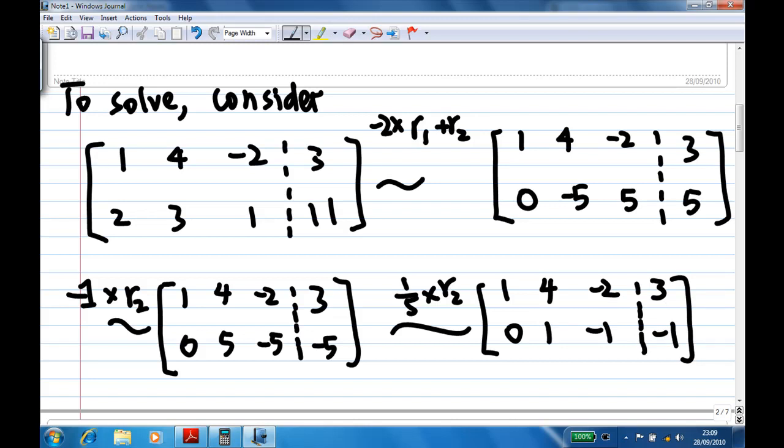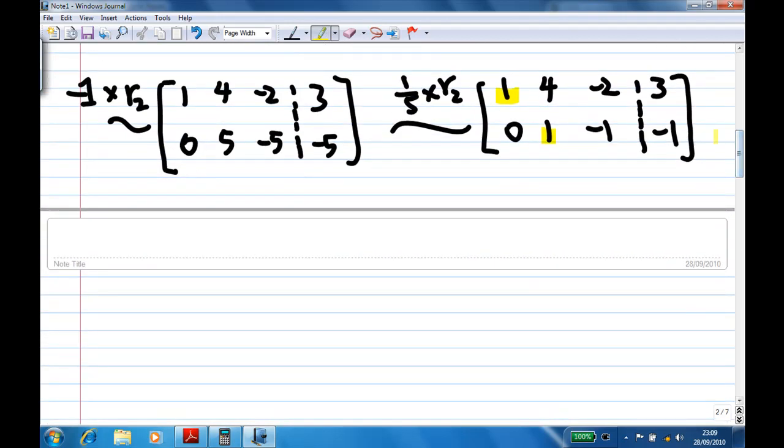And in order to make a zero above the leading one, I want to take the second row times minus 4 and add to the first row. So I take the second row times minus 4, add to the first row.